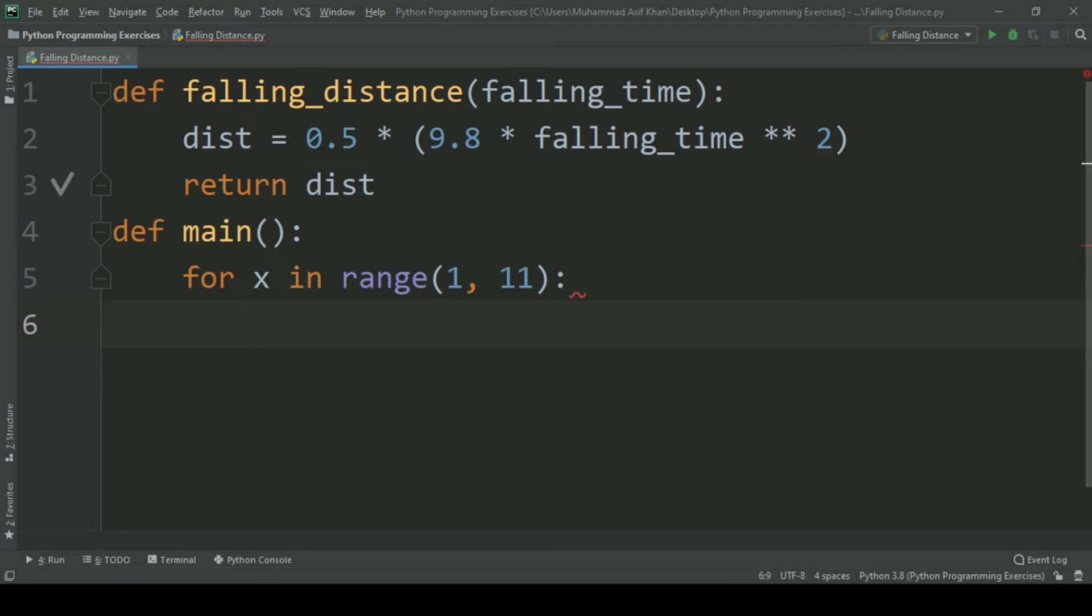In this loop create a variable distance and set it equal to the value returned by falling_distance with the argument x. The value of x will be incremented at each iteration of the loop.